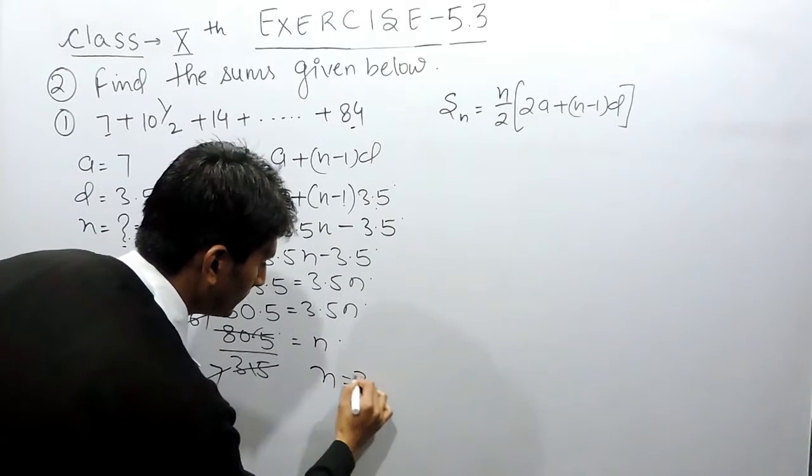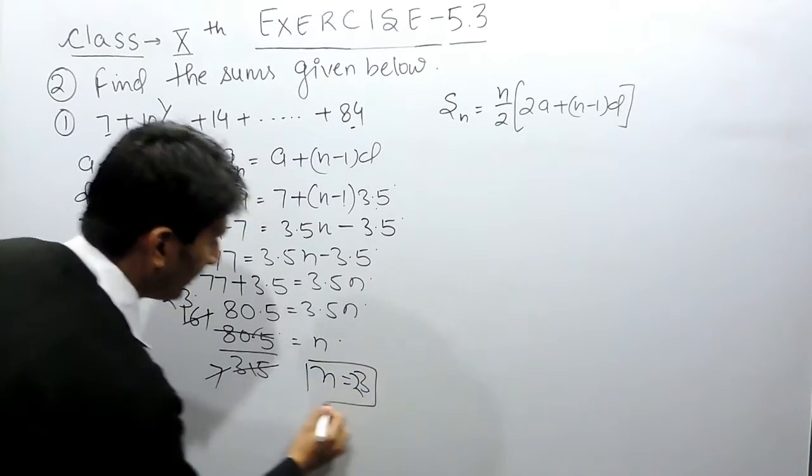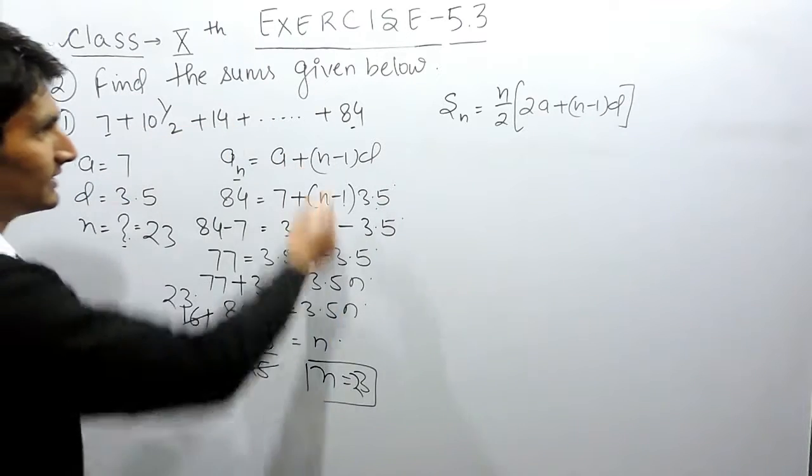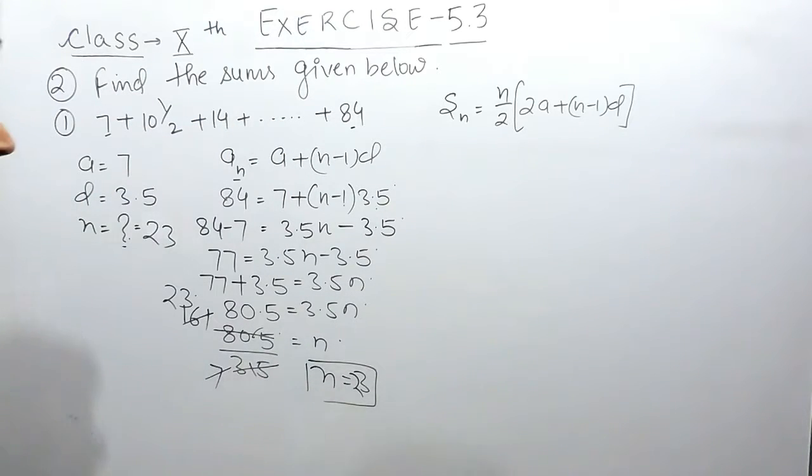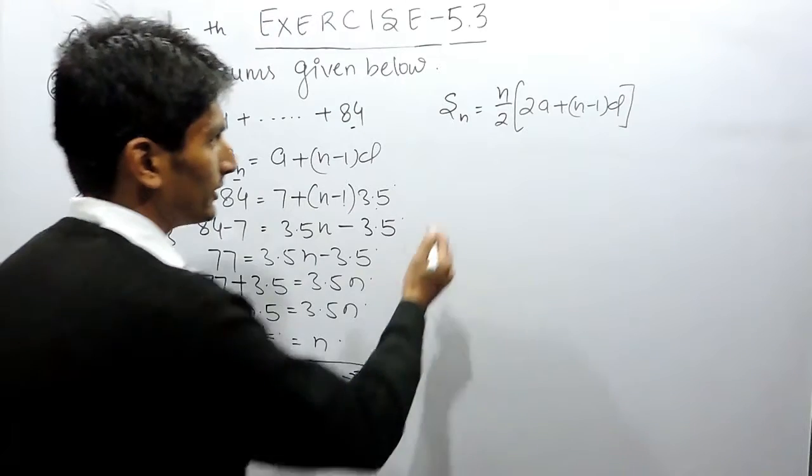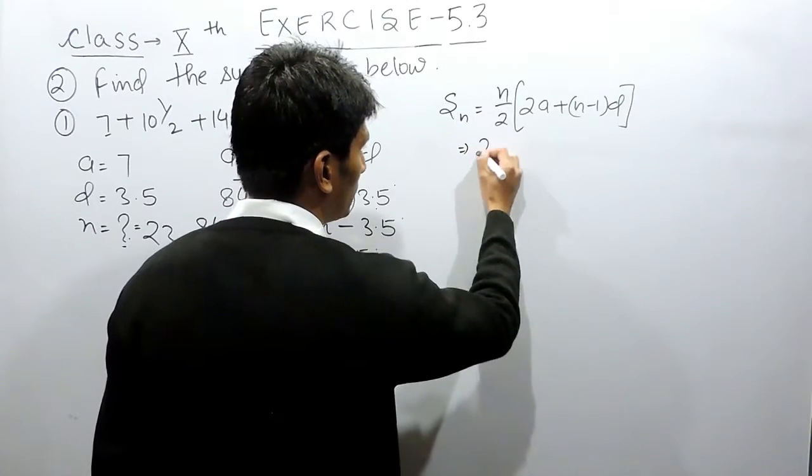So here the value of n must be equal to 23. So you can say that there are 23 terms in this AP. Now you have to find the sum of these 23 terms. For that, we have to use this formula.